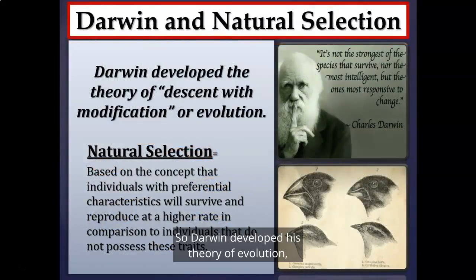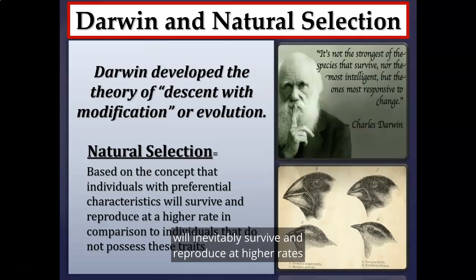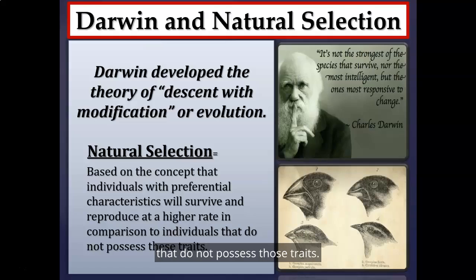Darwin developed his theory of evolution — the theory of descent with modification — and coined the idea of natural selection. It's based on the concept that individuals with preferential characteristics will inevitably survive and reproduce at higher rates compared to individuals that do not possess those traits.